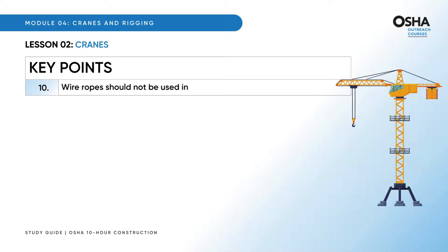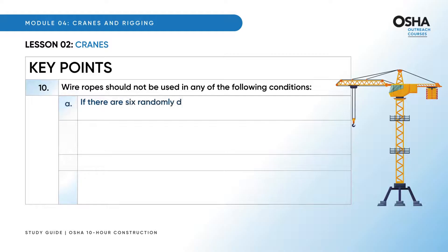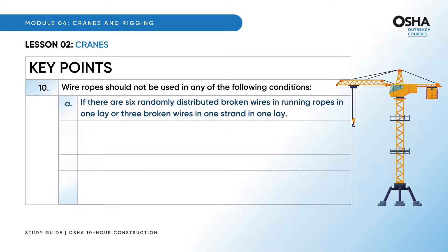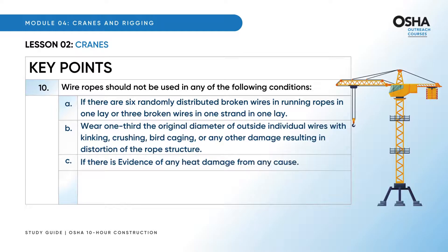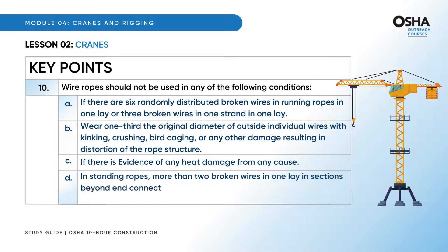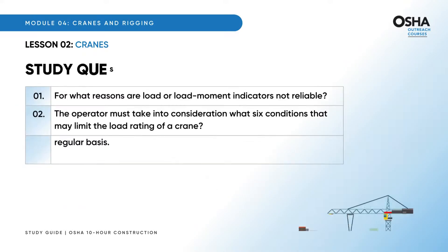Lastly, wire ropes should not be used in any of the following conditions: if there are six randomly distributed broken wires in running ropes in one lay, or three broken wires in one strand in one lay; where one-third the original diameter of outside individual wires shows kinking, crushing, bird caging, or any other damage resulting in distortion of the rope structure; if there is evidence of any heat damage from any cause; or in standing ropes, more than two broken wires in one lay in sections beyond end connections, or more than one broken wire at an end connection. Now look at the study question.